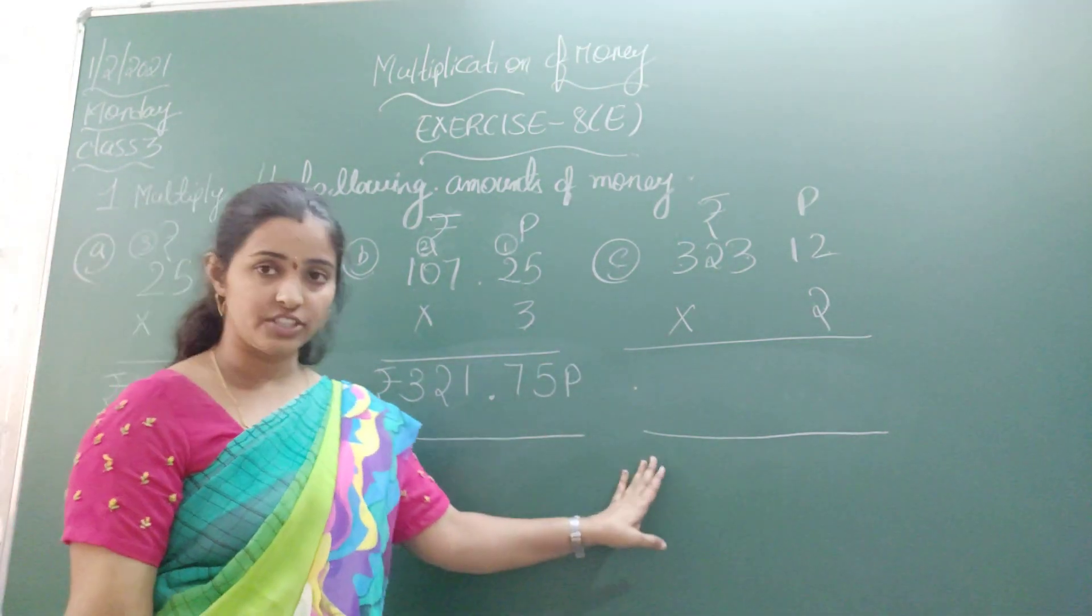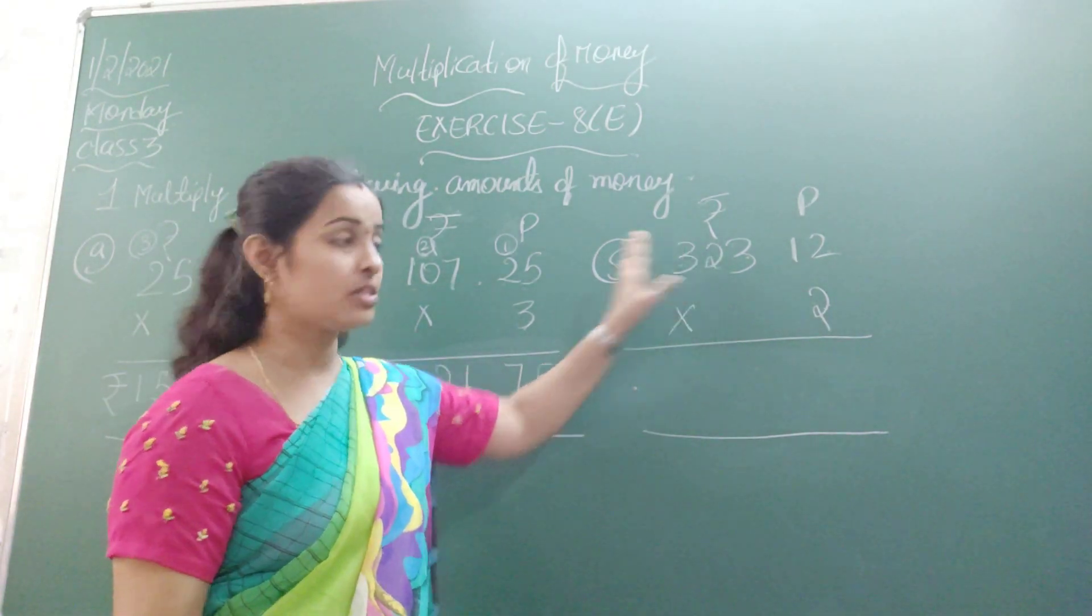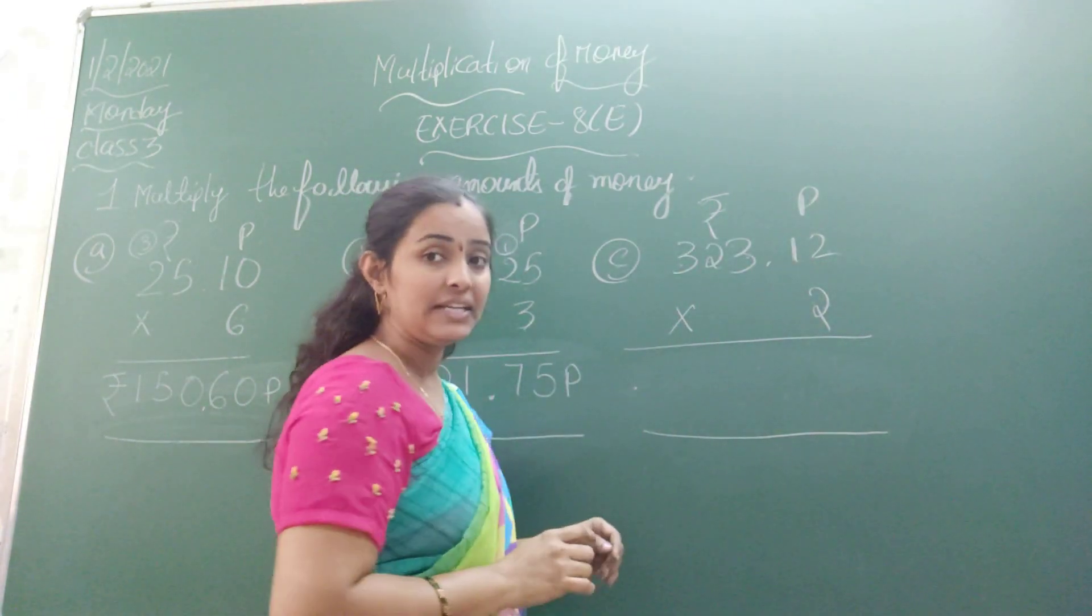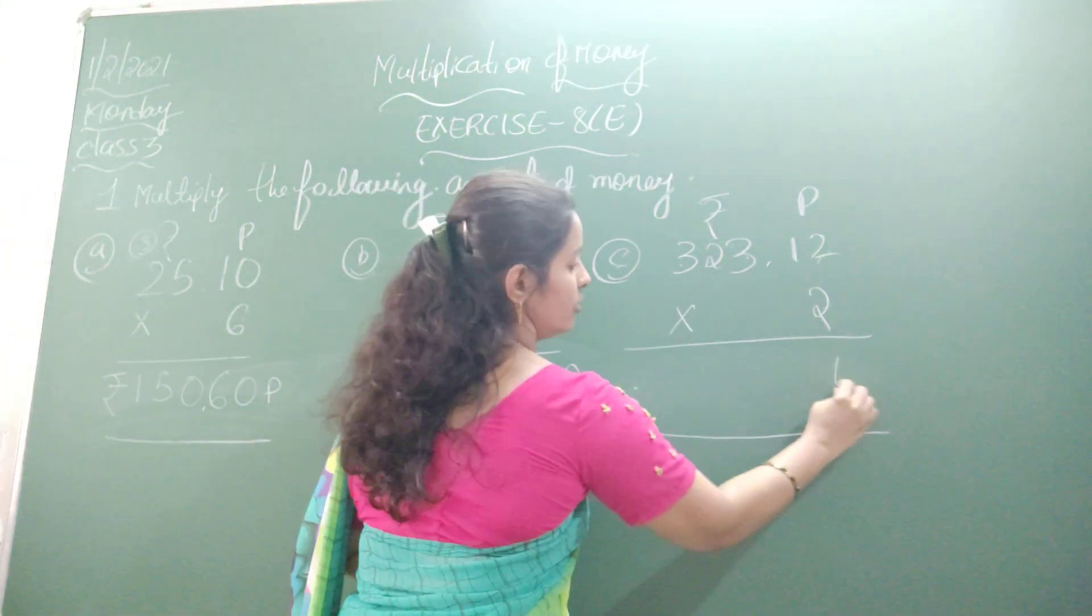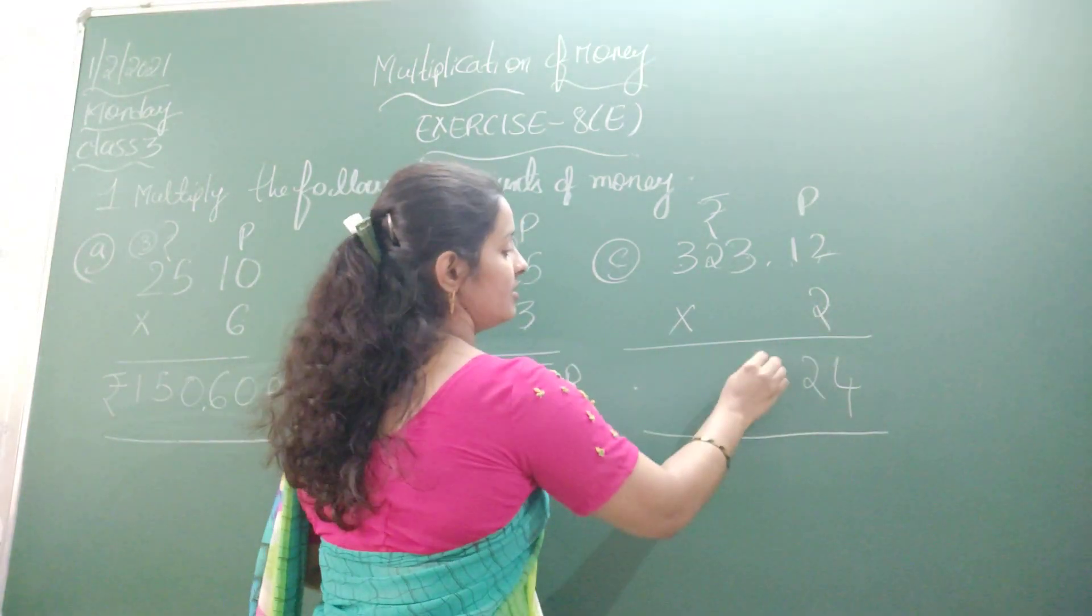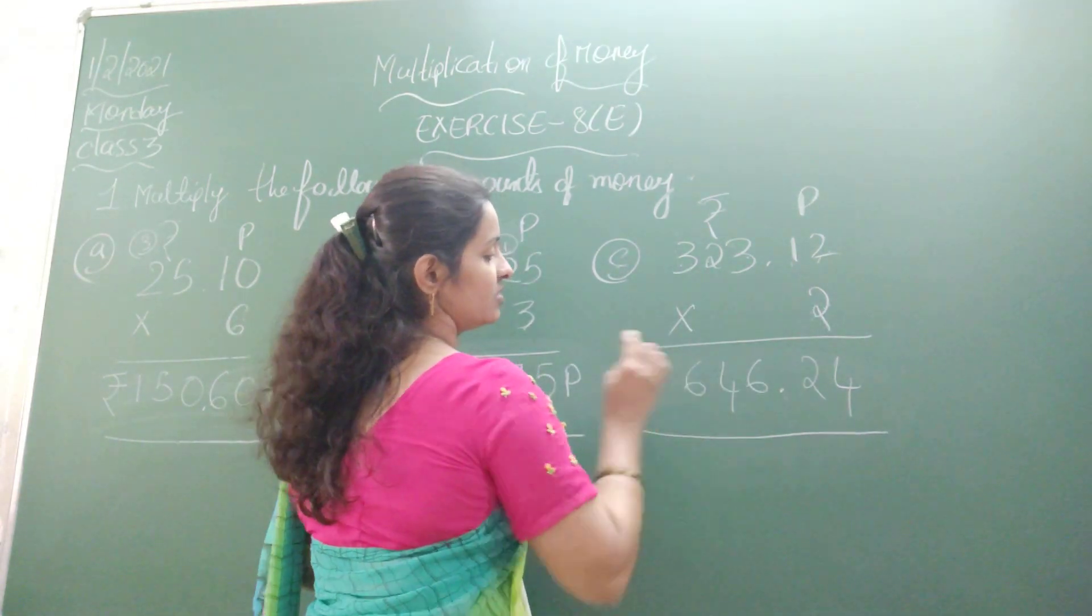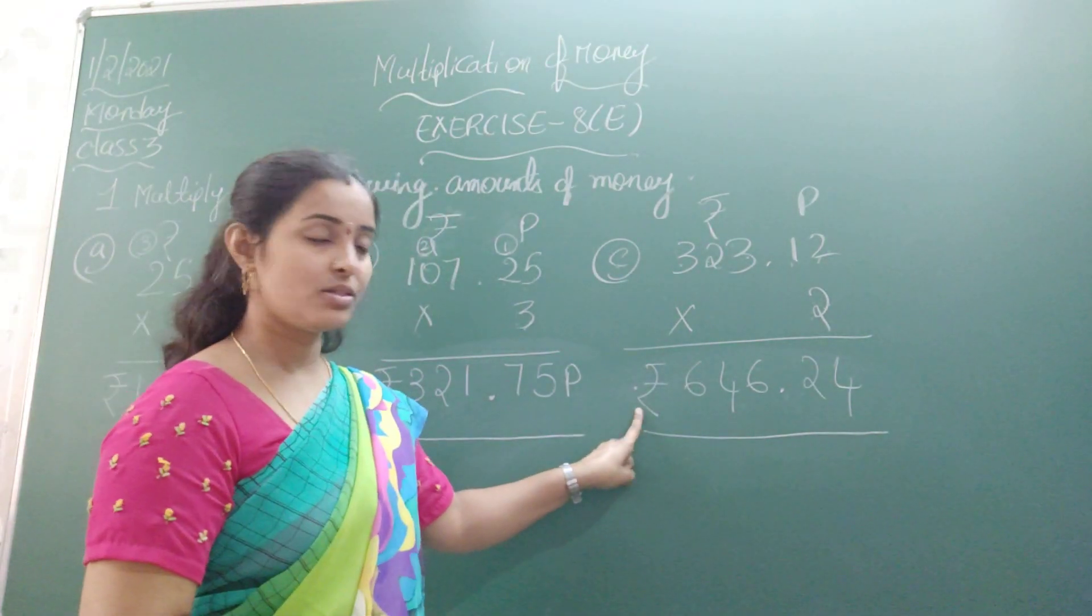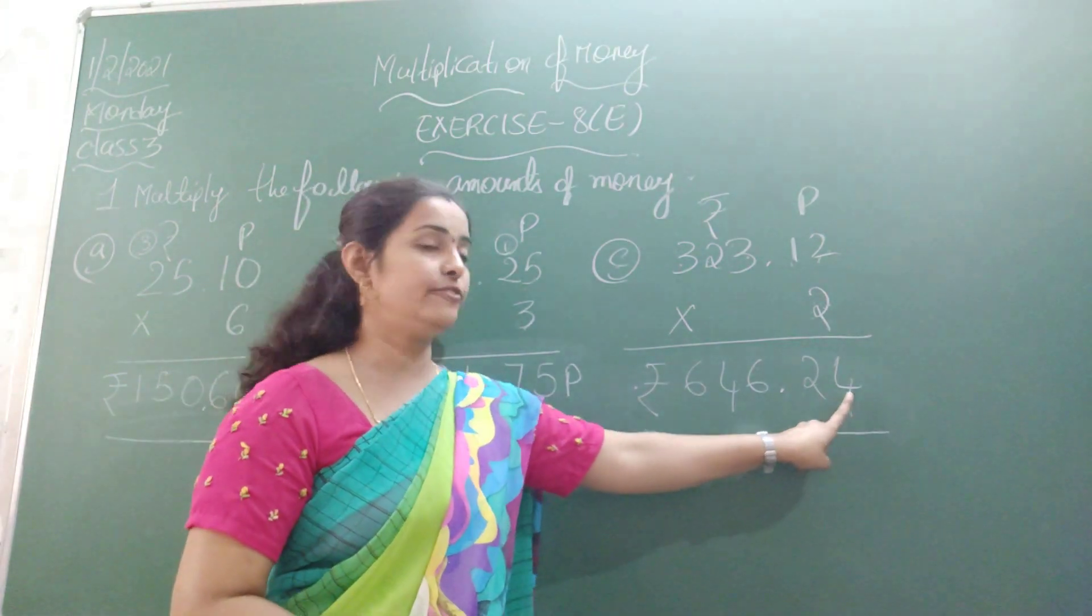Now look at the next question. What do you have? 323 rupees and 12 paise. Multiply with 2. So what will you get? 2 twos are 4, 2 ones are 2, point. 2 threes are 6, 2 twos are 4, 2 threes are 6. The answer after multiplying is 646 rupees and 24 paise.